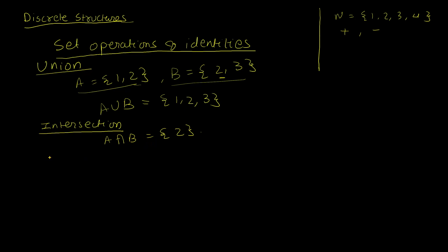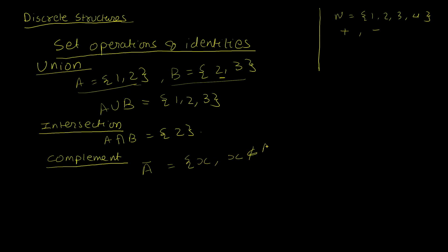Another set operation is the complement. The complement of a set is a new set formed by taking everything that is not in the set. In set builder notation, A complement is the set of all elements x such that x does not belong to A.